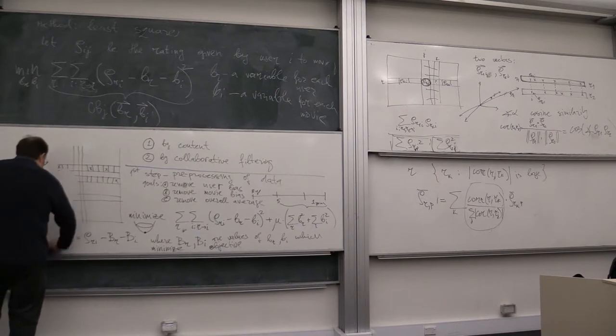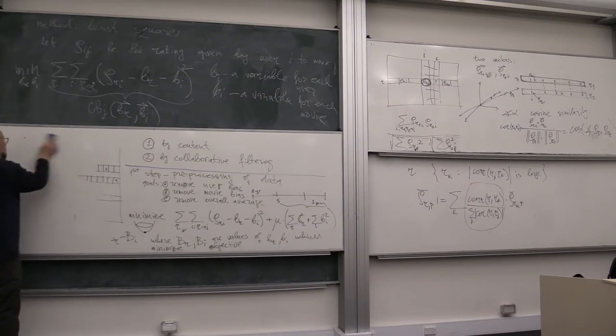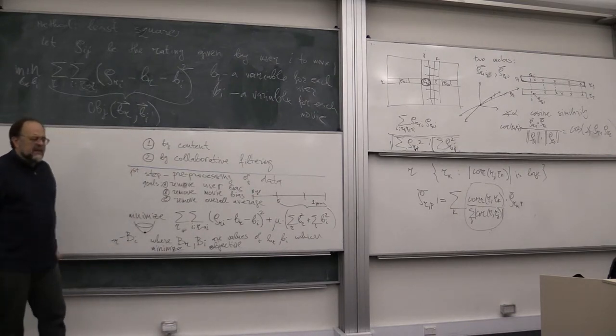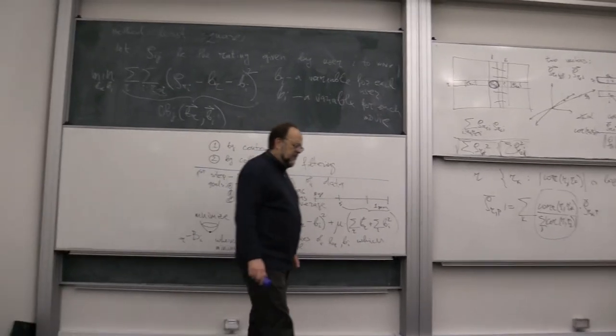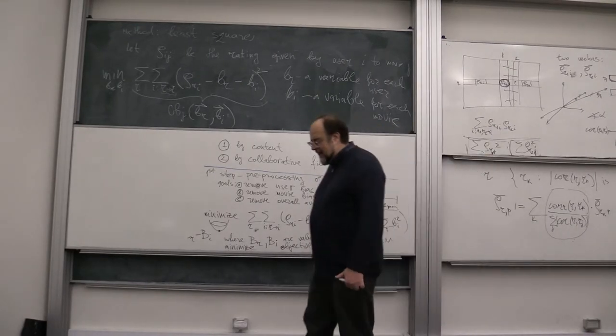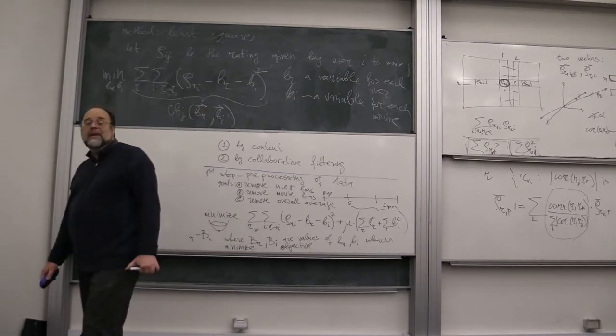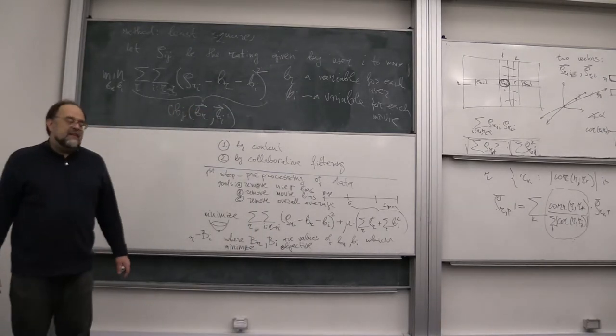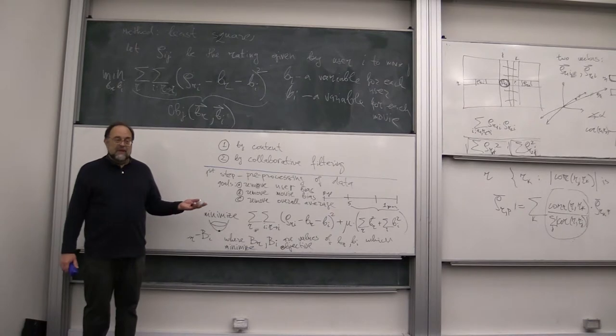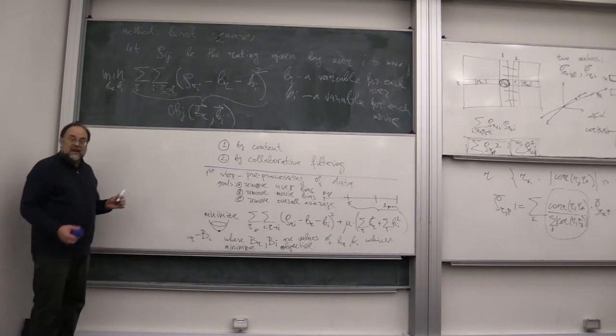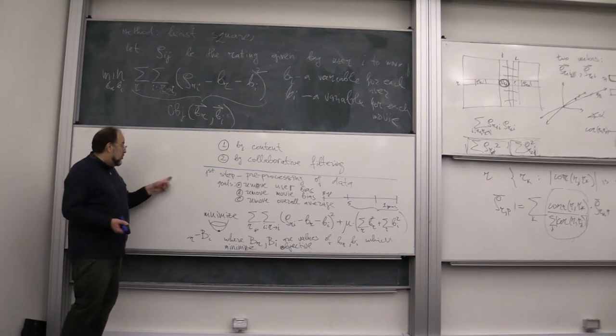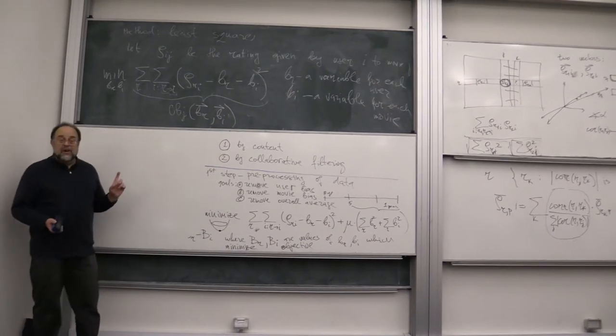So, another method. So, the winning, so, in this Netflix challenge, very quickly, within months, people were able to beat the Netflix recommender system. But then, the improvements became minuscule. And eventually, amazingly enough, so, how do you evaluate the recommender system? You simply take this matrix that I erased, and you remove some of the values. And then, you use this method to guess the values that you removed.